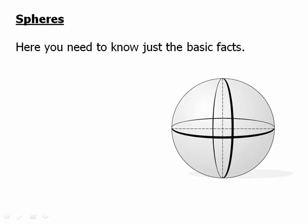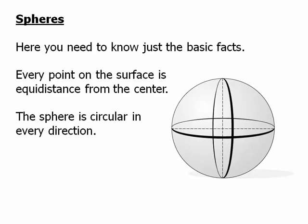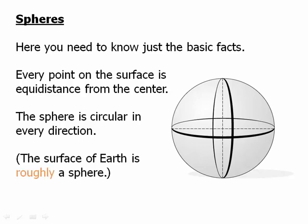Finally, spheres. Here you need to know just the basic facts. You need to know that every point on the surface is equidistant from the center. You need to know that the sphere is circular in every direction. Incidentally, the surface of the Earth is roughly a sphere. Not exactly. It turns out that the Earth is a little wider at the equator. But it's roughly a sphere.